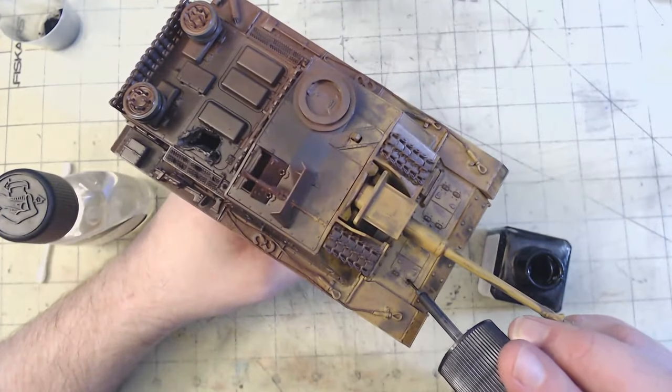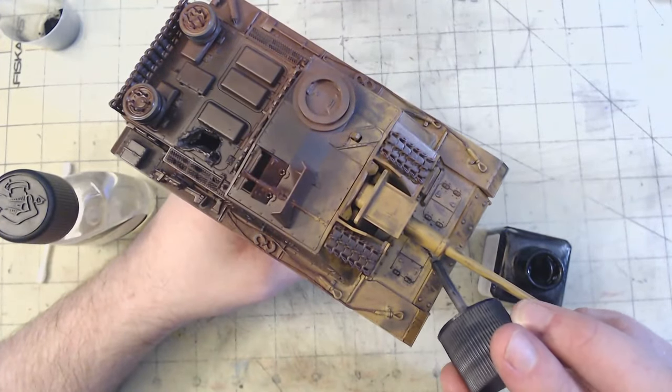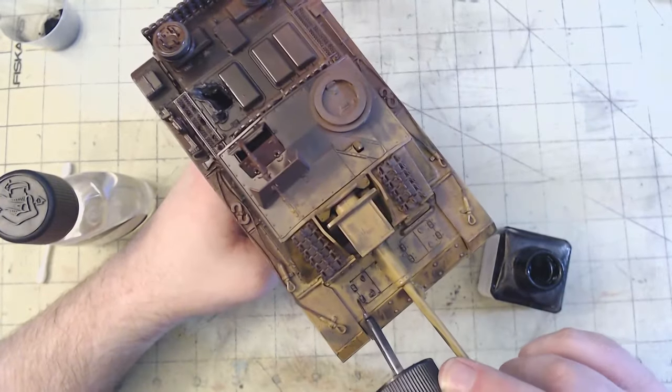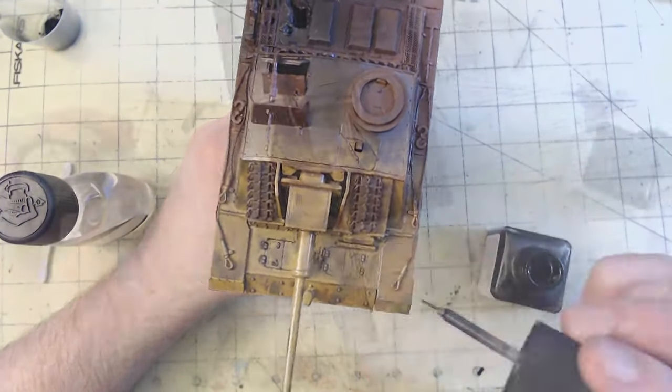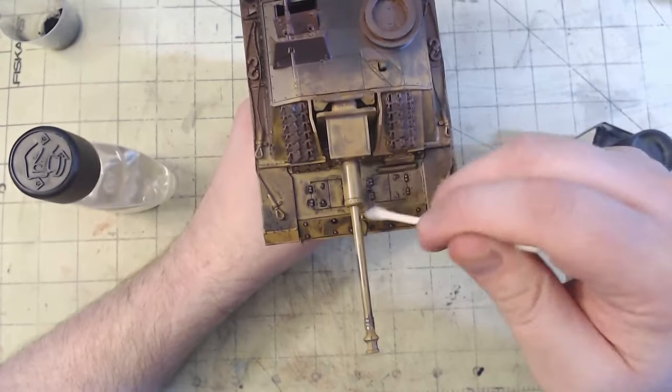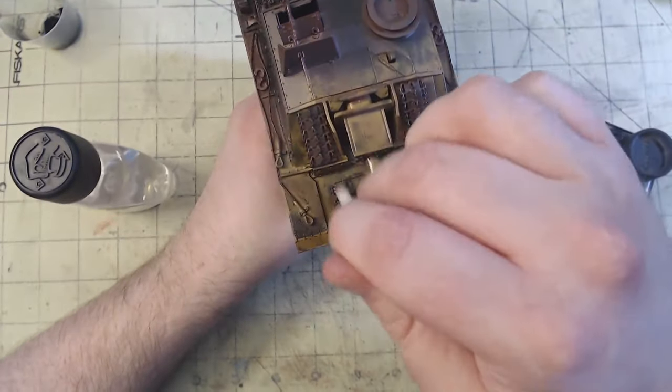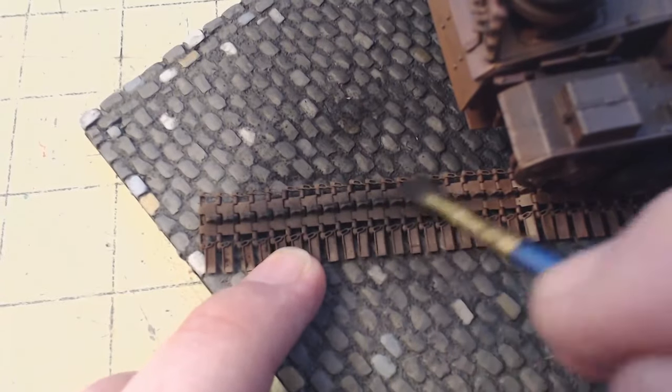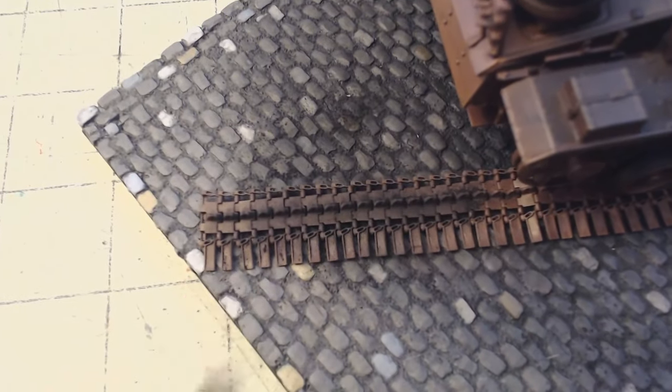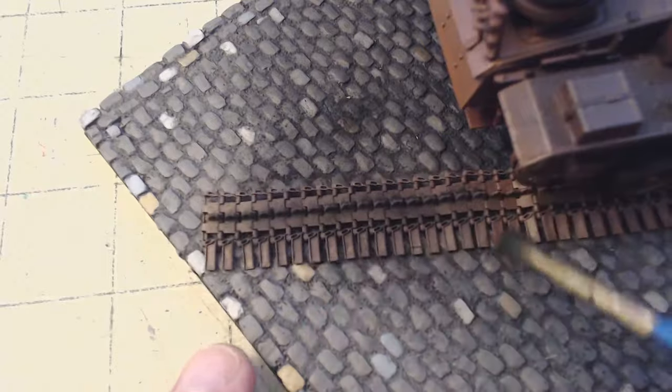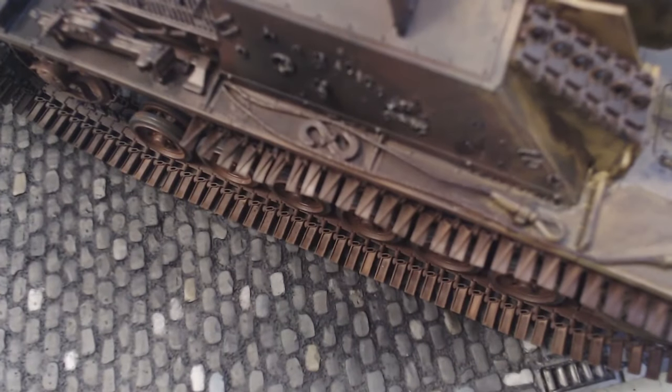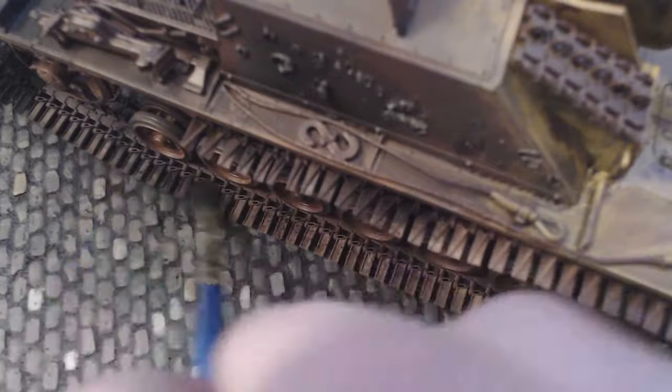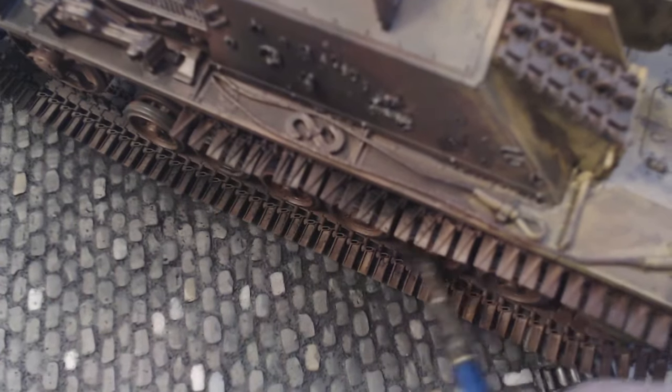A quick coat of Mr. Super Clear gloss varnish and then Tamiya panel line accent color black was quickly applied to any panel lines that needed it. Excess panel liner was cleaned up with a cotton bud damped with some artist's white spirit. The very last thing to do was to put the tracks on, place the vehicle on the base, and put some last bit of pigment weathering on the tracks. After that, I think we can call this one complete.